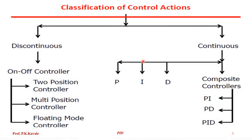Classification of control action depends on discontinuous and continuous types. Discontinuous controllers include the on-off controller, with three types: two-position controller, multi-position controller, and floating mode controller. We are interested in continuous controllers: proportional, integral, and derivative, and composite controllers such as proportional-integral, proportional-derivative, and proportional-integral-derivative combinations.